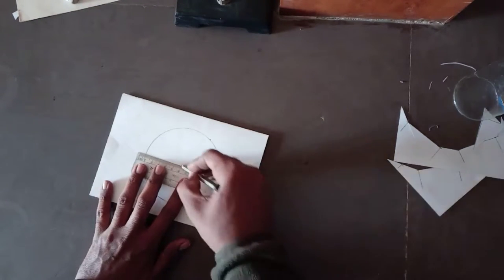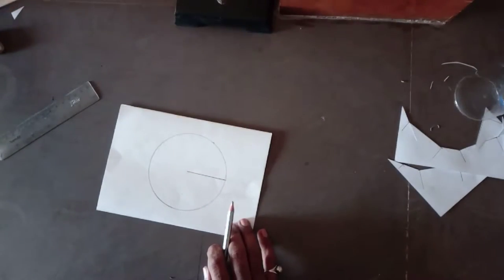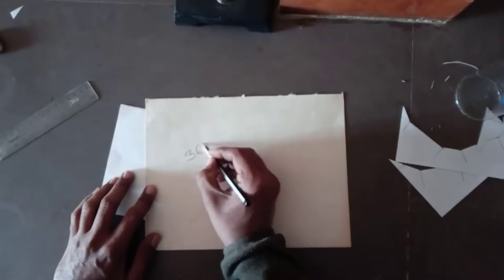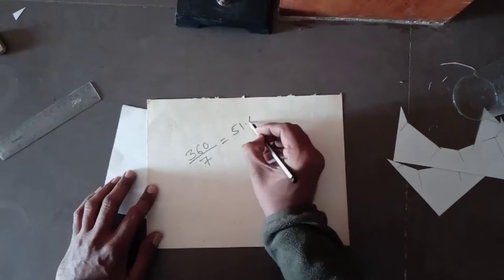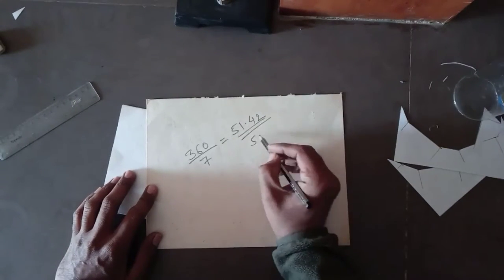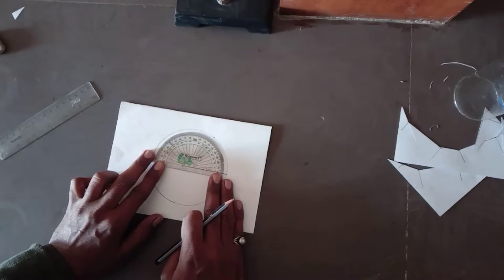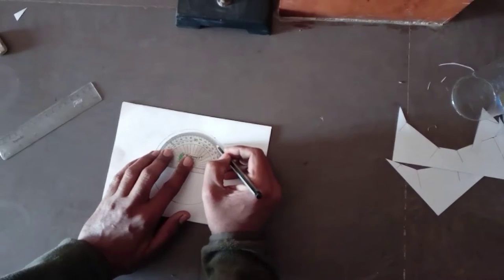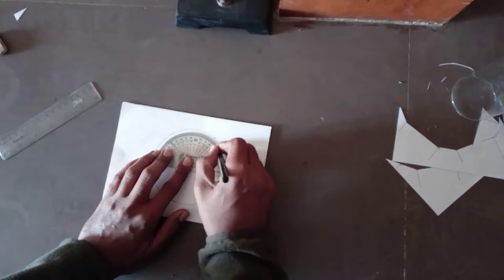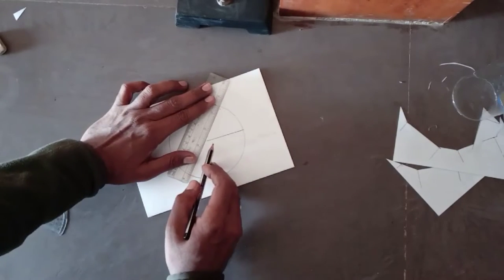Now make the radius of the circle. We know that the number of sides in heptagon is 7. So divide 360 by 7, you will get 51.5 approximately. So make an angle of 51.5 degrees at the center of the circle like this.